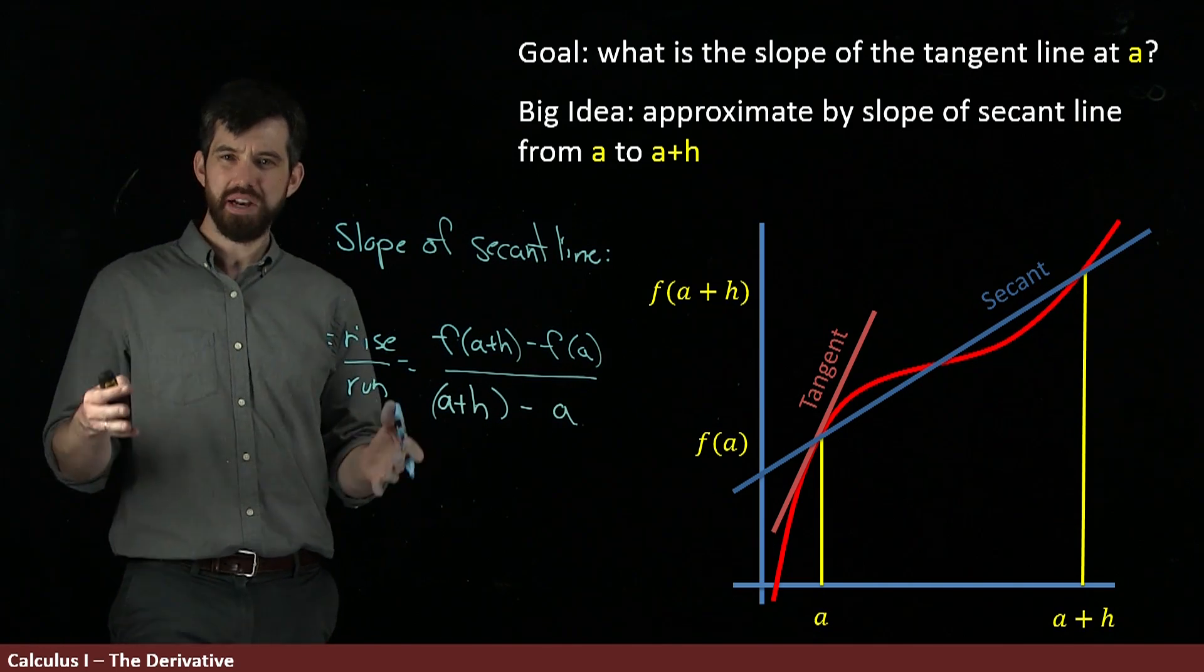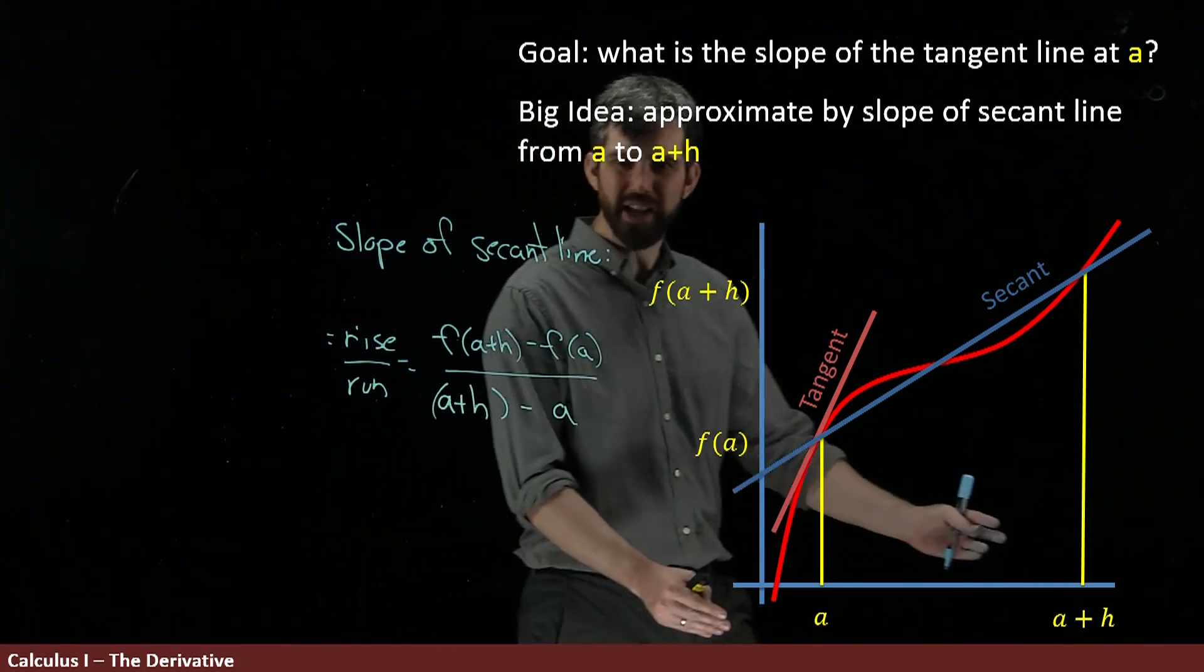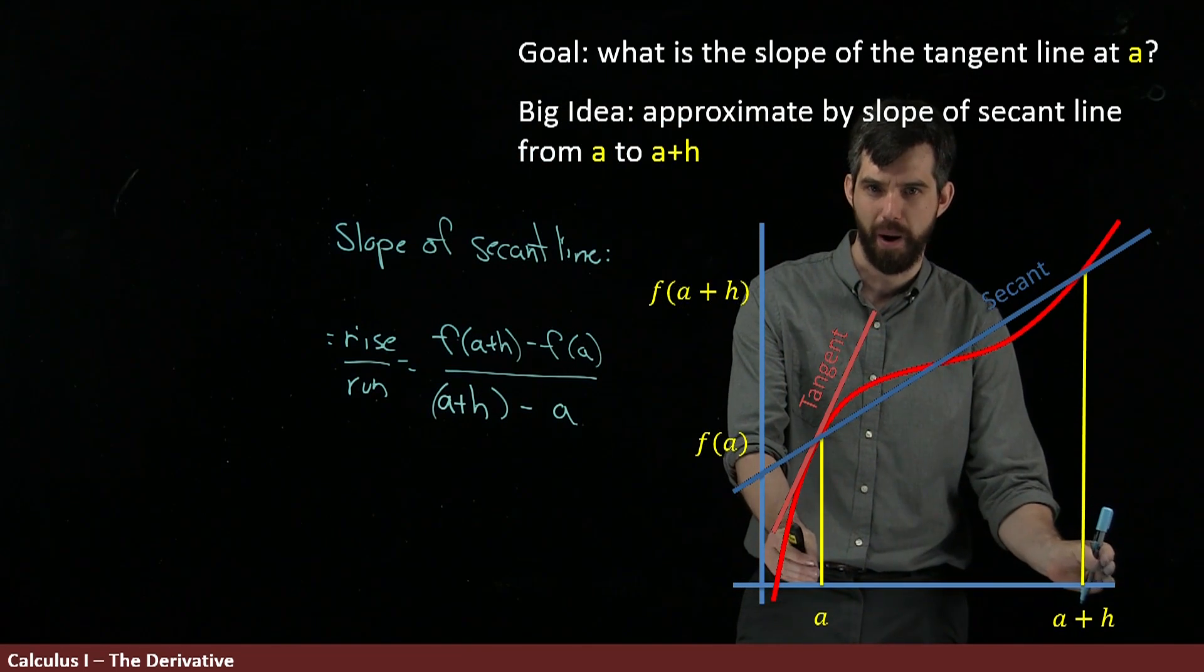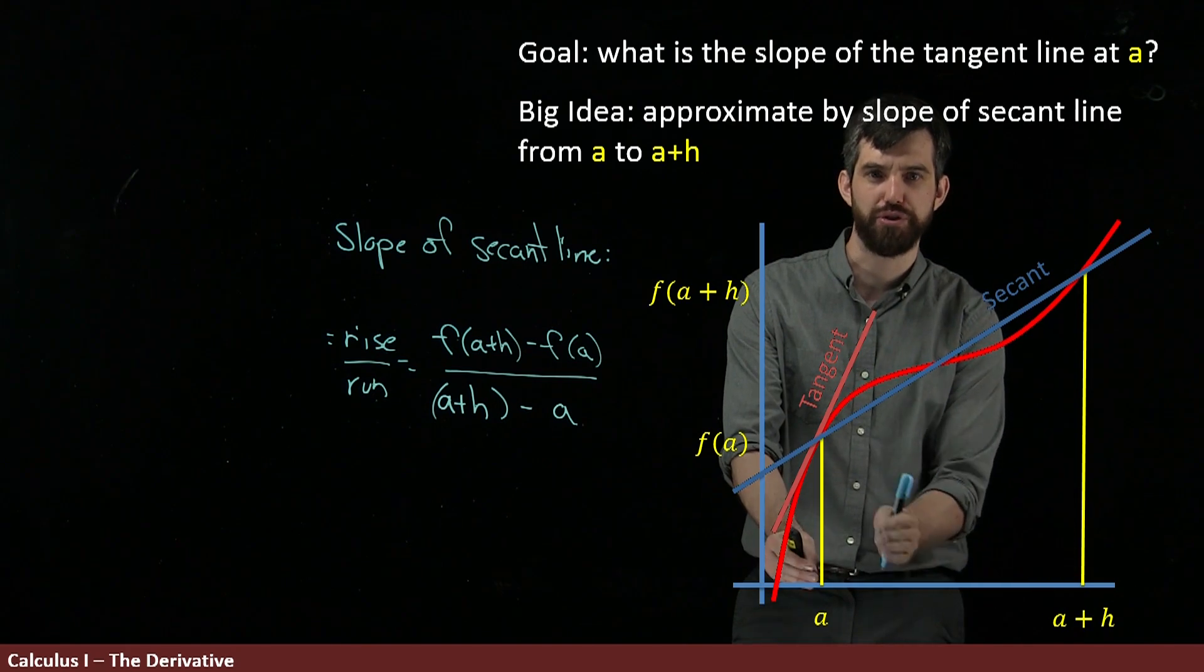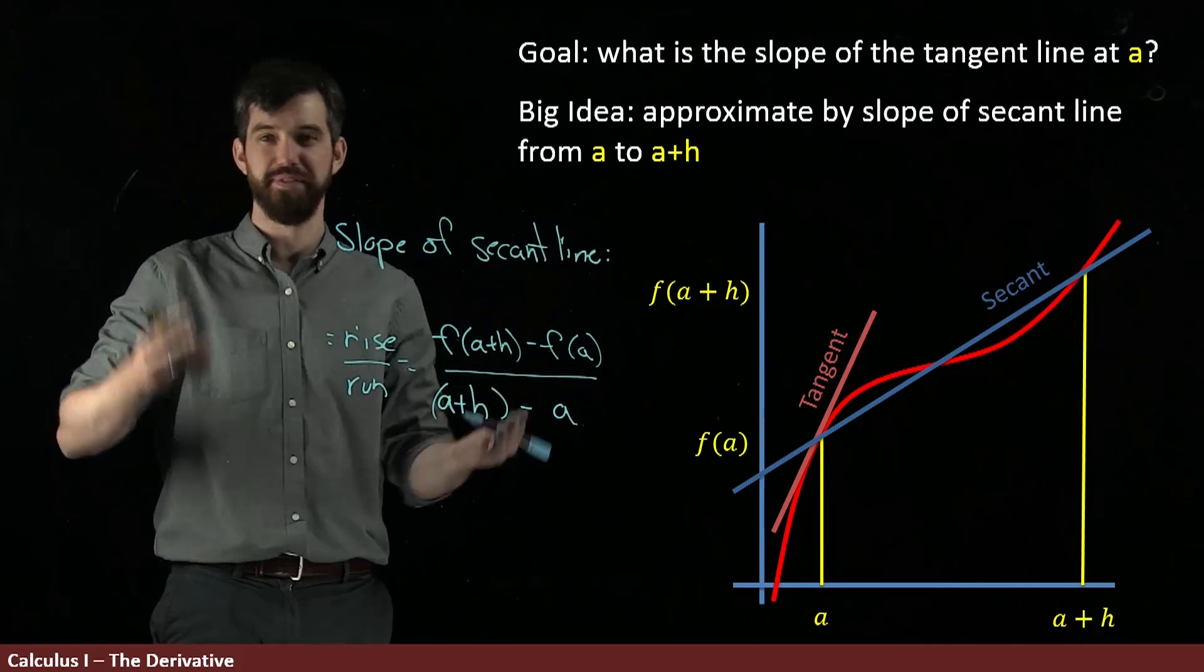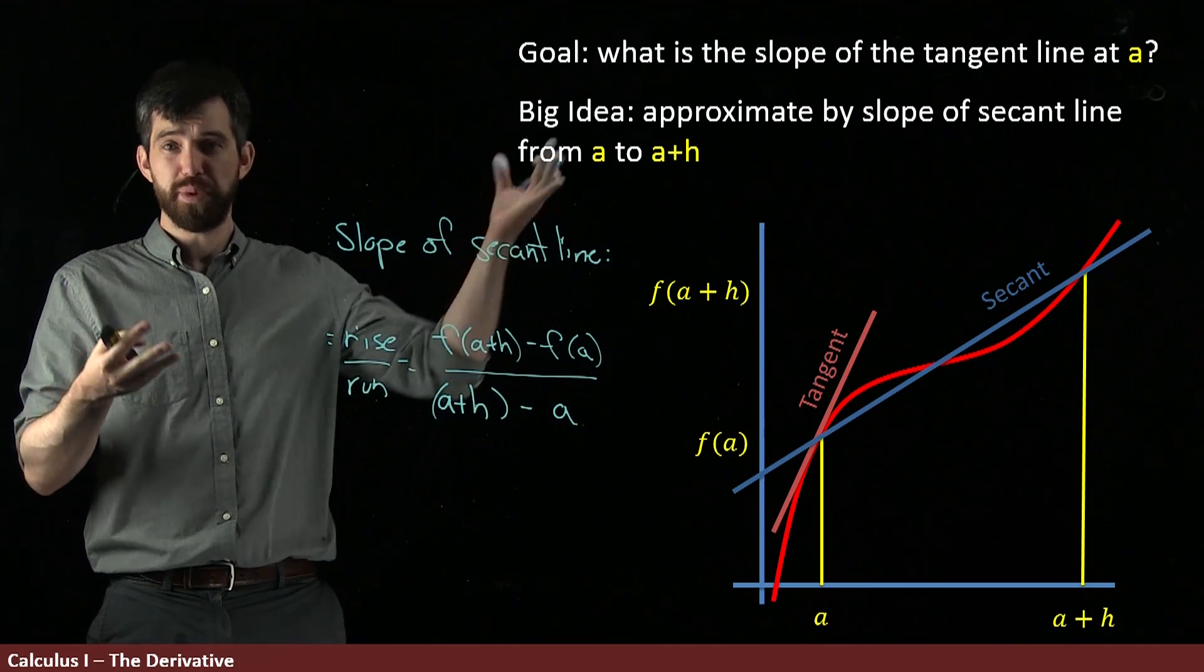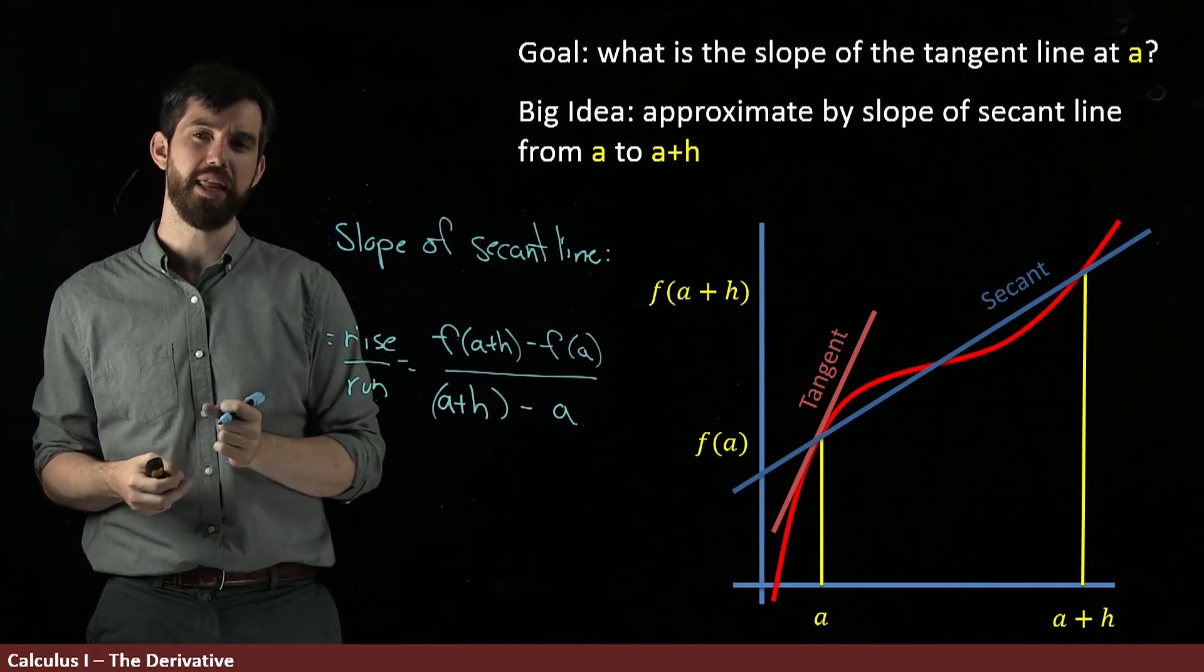Now, I actually want to try to demonstrate to you what happens if instead of having these sort of exaggeratingly far apart, my h got closer and closer and closer in. We have this formula. For any h, we have this formula, positive or negative, doesn't matter. This formula is here. That's the slope of a secant line. And our big idea is to approximate the tangent line by the slope of the secant line.